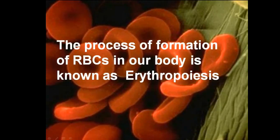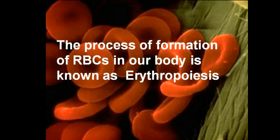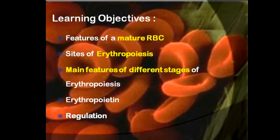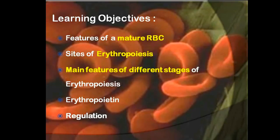Erythropoiesis is the process of formation of RBCs in our body. In this presentation we will see features of mature RBC, sites of erythropoiesis, main features of different stages of erythropoiesis, erythropoietin and its regulation.